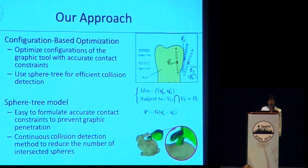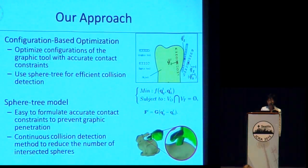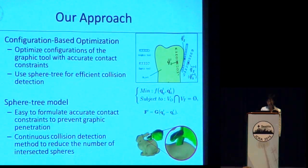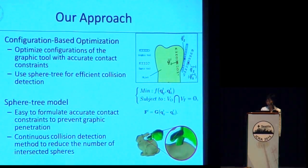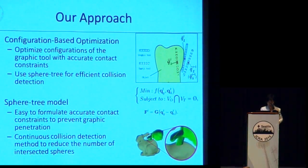We proposed a configuration-based optimization approach. The basic idea is to optimize configurations of the haptic tool with accurate contact constraints. We use a sphere tree for efficient collision detection and a triangle mesh for graphic display. The reason we use a sphere tree model is that it is easy to formulate accurate contact constraints to prevent graphic penetration. We also developed a continuous collision detection method to reduce the number of intersected spheres.